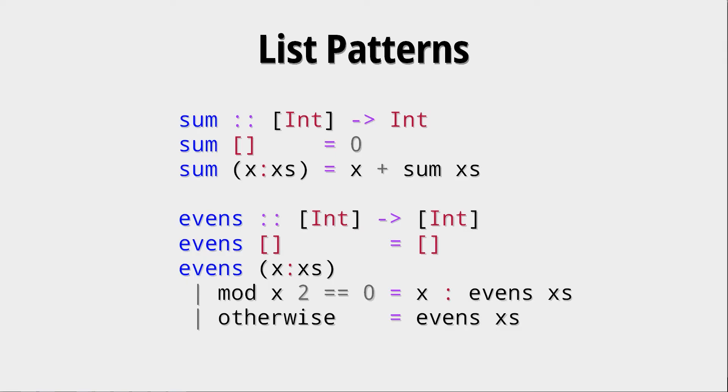We can construct a function like the evens function, which filters out all non-even numbers. We say that evens of the empty list has to be the empty list, but if we have an element x within that list, we check if it can be cleanly divided by two with this modular operation. If it can, if there's no residual, we put it into our new list again. This is very important.